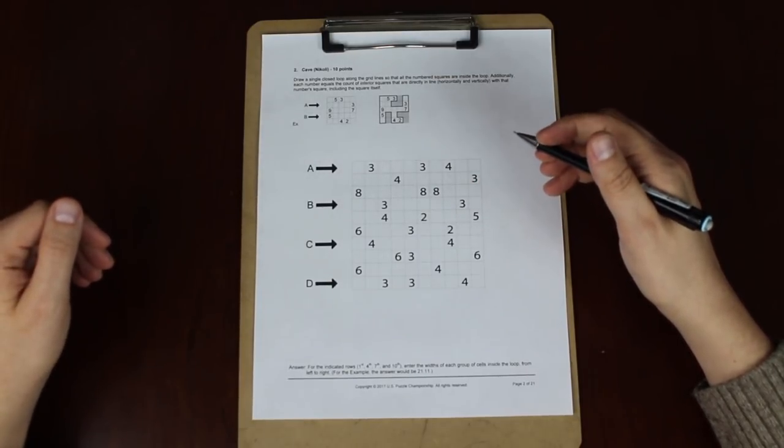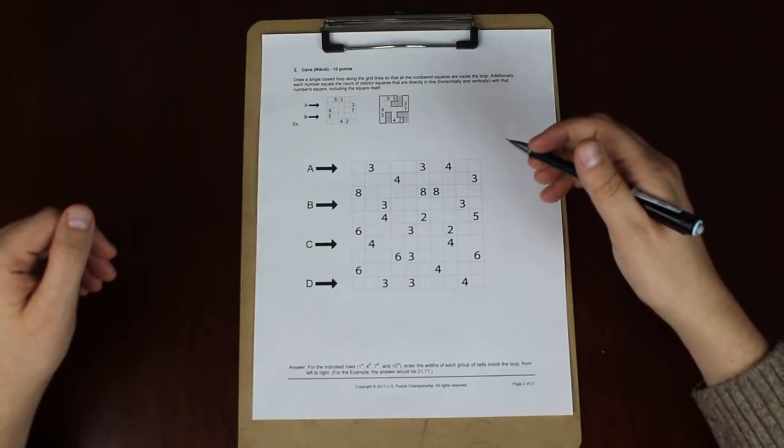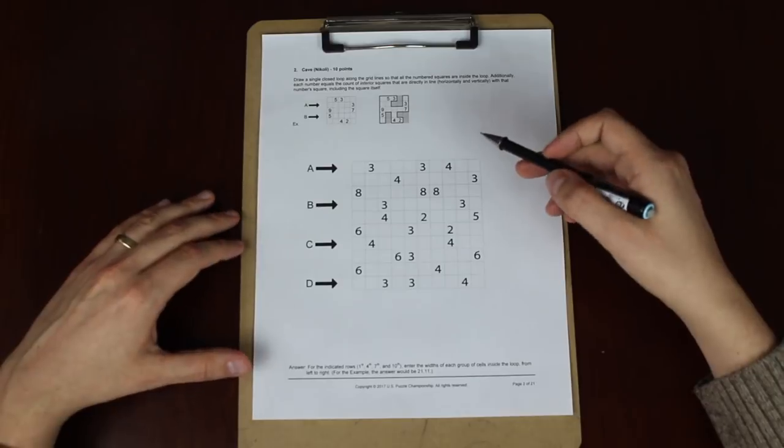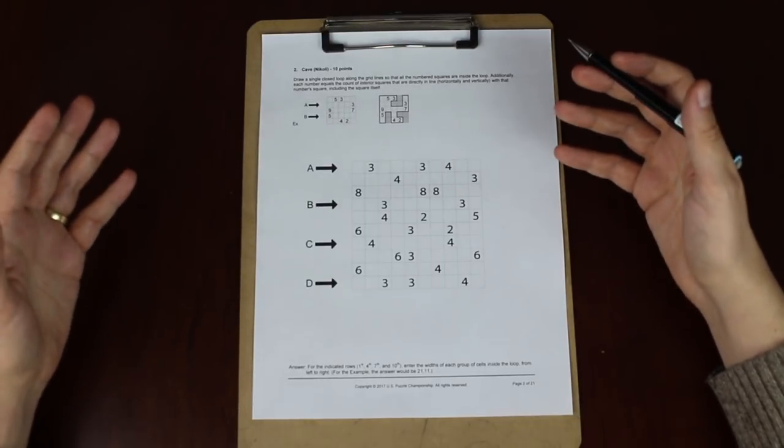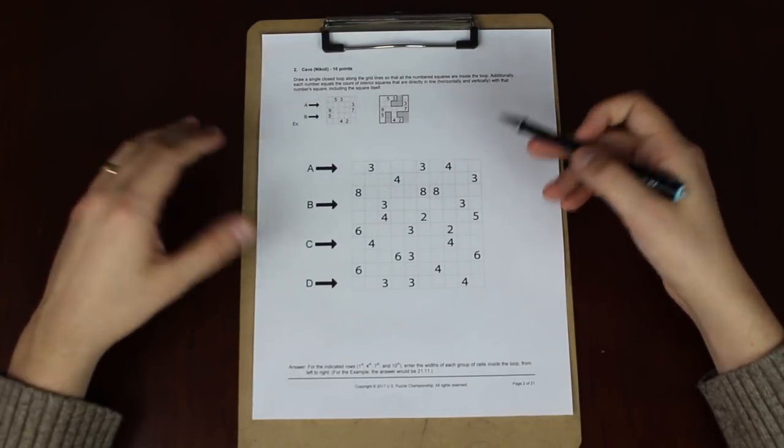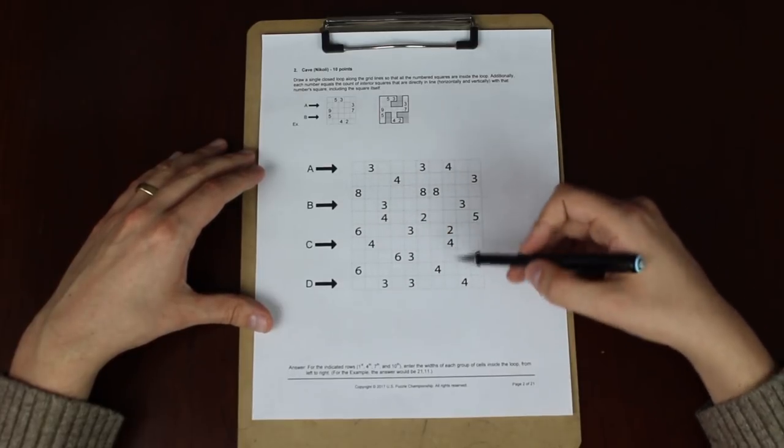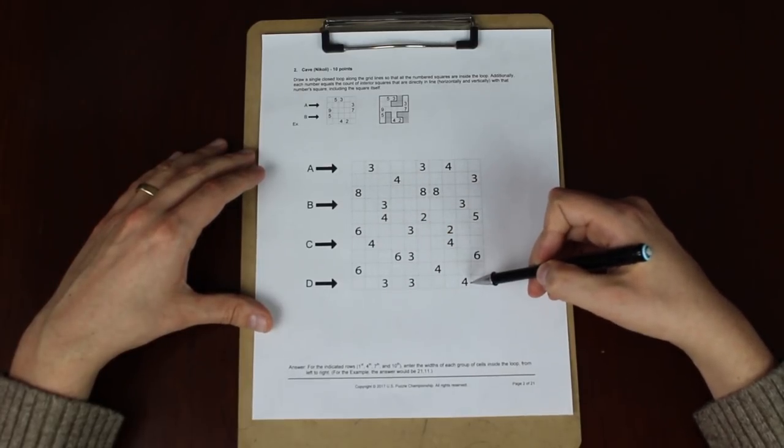If you want to solve this puzzle yourself, I've put a link in the description to the US Puzzle Championship from last year, which is where this puzzle is from. Now this is an example of what's called a cave puzzle. So what you're doing is you're drawing a single closed loop around this grid, such that all of these numbered squares are inside of the loop.